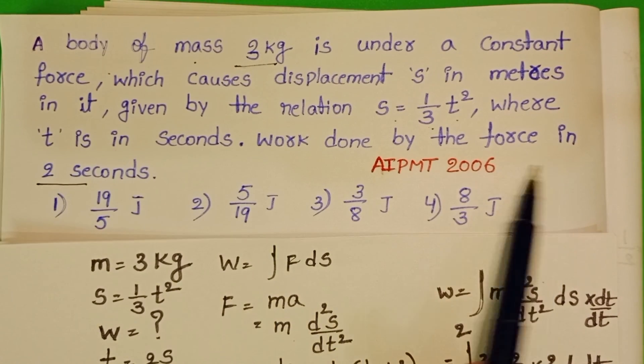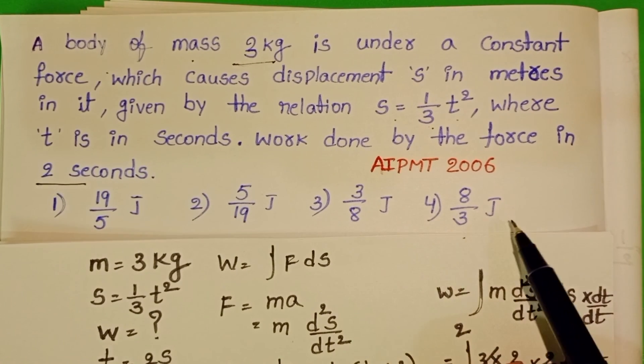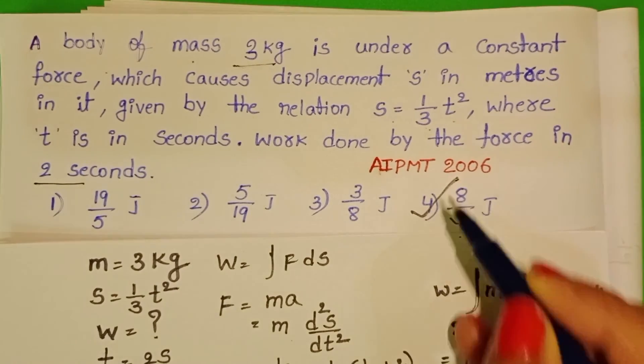Work done by the force in 2 seconds is 8 by 3 joules. The 4th option is correct.